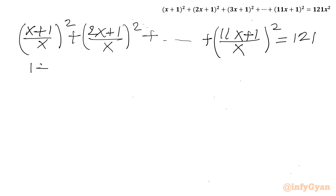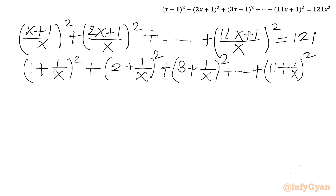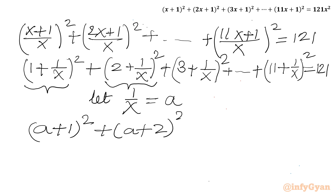Dividing through, each term becomes (n + 1/x)² for n = 1 to 11. Now let 1/x = A. So the equation becomes: (A+1)² + (A+2)² + (A+3)² + ... + (A+11)² = 121.